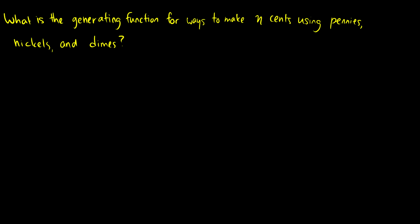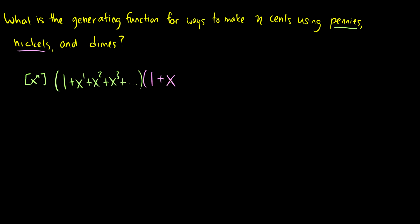One more example — this involves making money. What is the generating function for ways to make n cents using pennies, nickels, and dimes? I'm not asking for any specific amount; I just want to know for any given number how many possible ways can I make it. With pennies, we want x to the n, so we deal with everything in terms of cents: 0 cents, 1 cent, 2 cents, 3 cents, going on to infinity. With nickels, you can have 0 cents, 5 cents, 10 cents, and so forth — we go by 5s because we're dealing with cents, not the number of nickels.